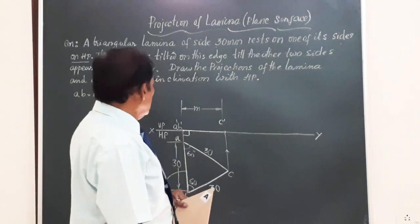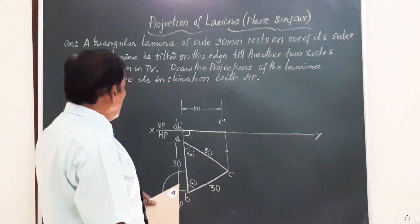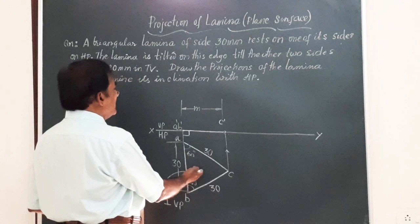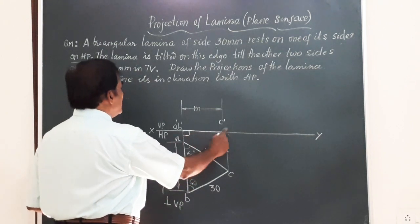So it could be anything. Now here, friends, the lamina is placed on HP. We have obtained the top view of an equilateral triangle of side 30 mm and the front view, a line on XY.